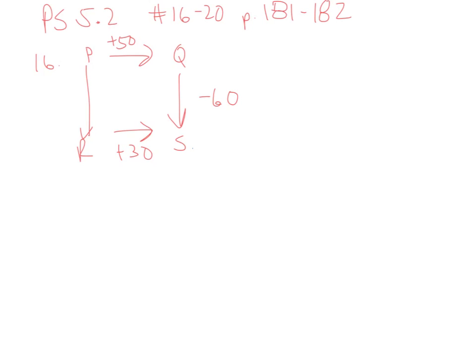When I look at this, then P to S, if I went P to Q to S, I would add the plus 50 and the minus 60, and I would expect a delta H of minus 10. But if I went from S to P, then I would flip both signs and expect it to be positive 10.